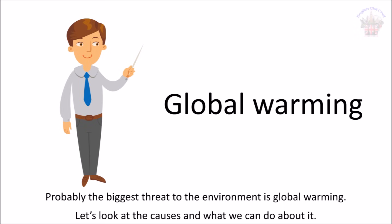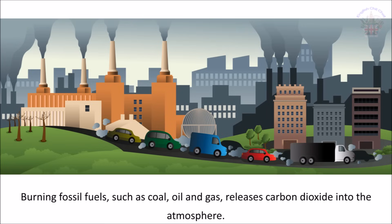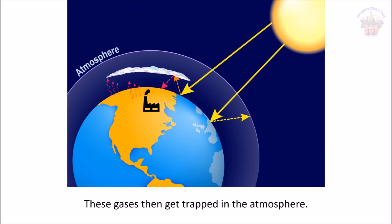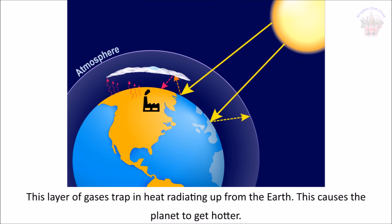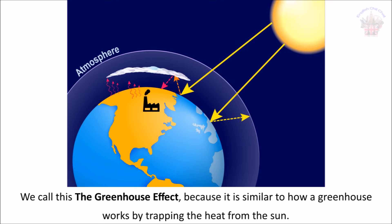Probably the biggest threat to the environment is global warming. Burning fossil fuels such as coal, oil and gas releases carbon dioxide into the atmosphere. These gases then get trapped in the atmosphere, and this layer of gases traps heat radiating up from the earth, causing the planet to get hotter. We call this the greenhouse effect because it is similar to how a greenhouse works by trapping the heat from the sun.